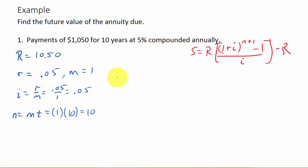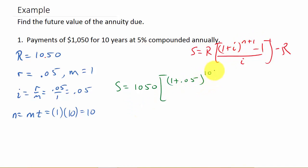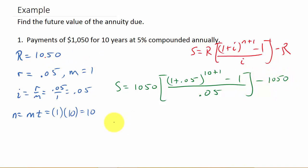Now we just plug everything in. S is equal to 1,050 times 1 plus I, which is 0.05, raised to the N plus 1 — that's raised to the 10 plus 1 — minus 1 over I, which is 0.05, minus R, minus 1,050.